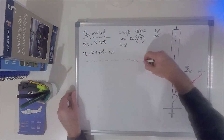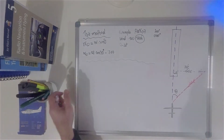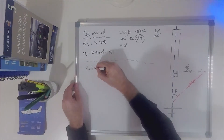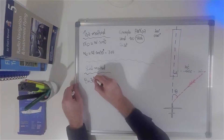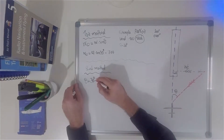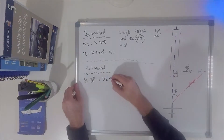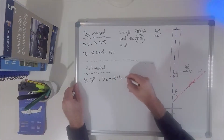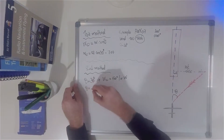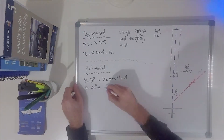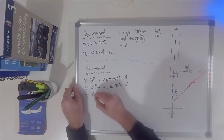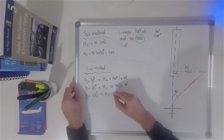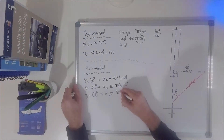The second method of calculation is an approximation of the previous method. If the angle between our track and the wind direction is 30 degrees, the crosswind component is going to be 50% of the wind speed. If that angle is 45 degrees, the crosswind component will be approximately equal to 70% of the wind speed. And if the angle is 60 degrees, then the crosswind component will be approximately equal to 90% of the wind speed.